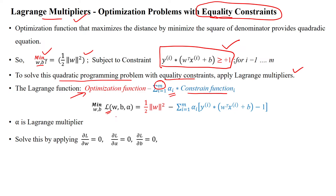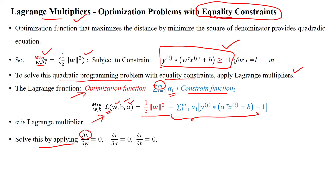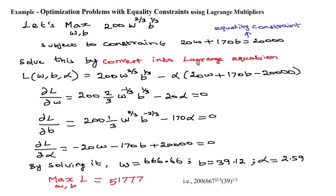When substituting the Lagrangian multiplier equation with respect to w, b, and the Lagrangian multiplier, we start with the objective optimization function and add the constraint function to it. This gives us a new combined equation. We then solve this by applying partial differentiation of the Lagrangian multiplier equation with respect to w, alpha, and parameter b, and set each equal to zero.